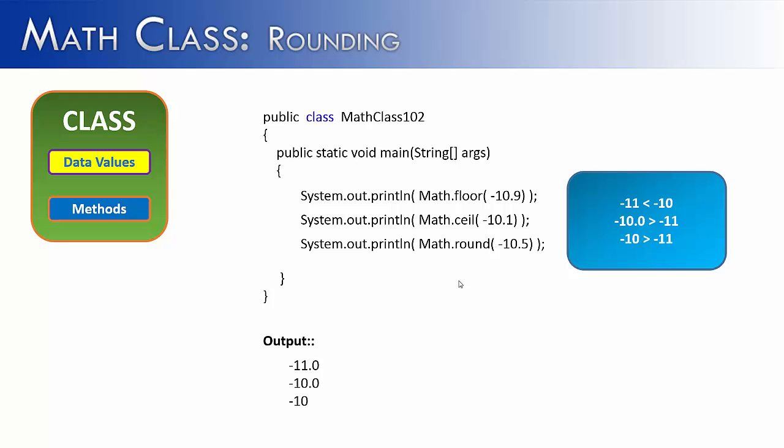same deal with Math.round. Negative 10.5 would round up, and rounding up would give us negative 10 because negative 10 is greater than negative 11. So the three rounding methods of the Math class can use negative numbers, and they're going to go the opposite way of positive numbers.